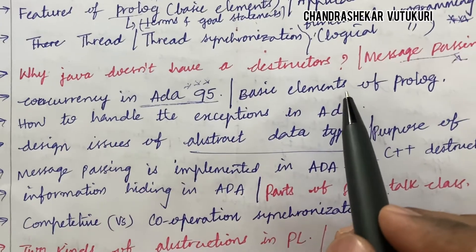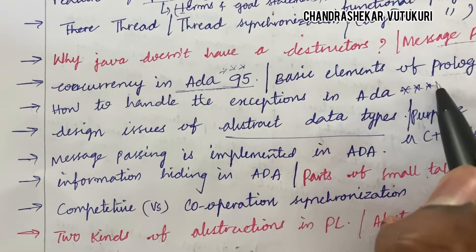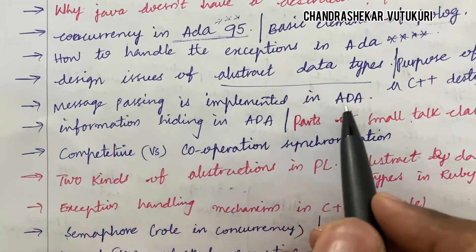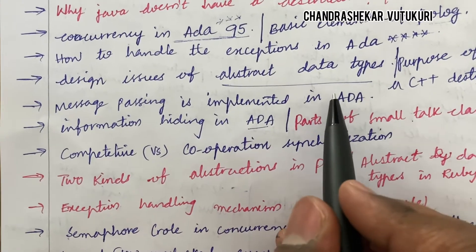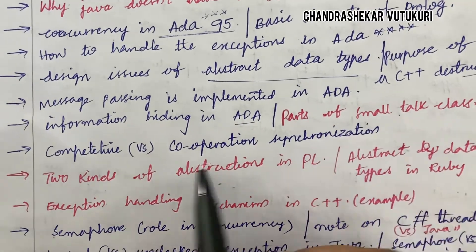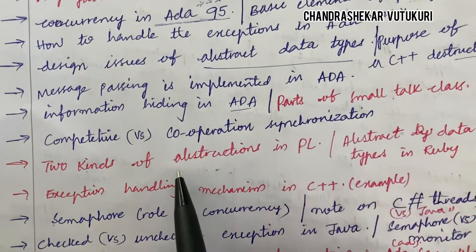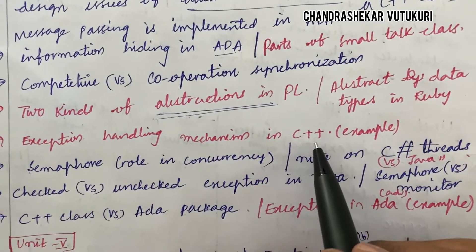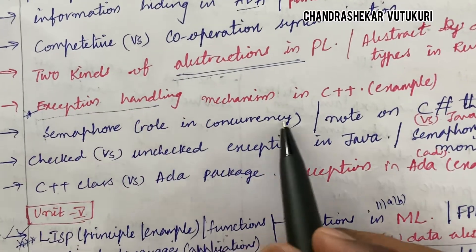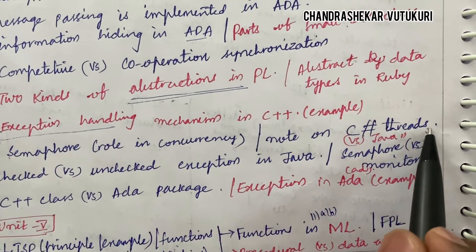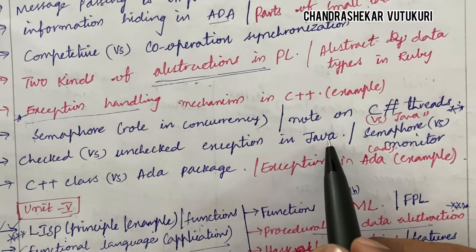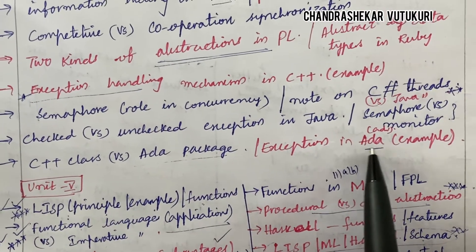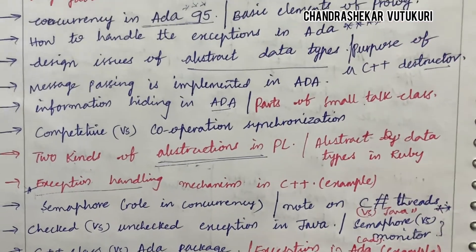Basic elements of logic, how to handle an exception in Ada as well as the usual way, is a sure question. Design issues of abstract data types, the purpose of a C++ destructor is a short question. Message passing as implemented in Ada, information hiding in Ada — do not skip any part, focus on each individual part. Competitive versus cooperation synchronization and their differences, two kinds of abstractions — you are going to get one question. Abstract data types in Ruby, exception handling mechanism in C++, semaphore and its role in concurrency, C threads versus Java threads and their differences, checked versus unchecked exceptions in Java, and semaphore versus monitor and their advantages are all short questions.